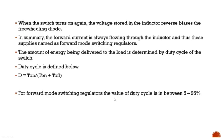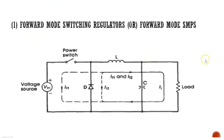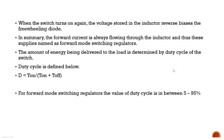When the switch is turned off, the inductor expects current to continue flowing, but due to the open circuit, the freewheeling diode conducts and the inductor discharges. When the switch is turned on again, the voltage stored in the inductor reverse biases the freewheeling diode and it stops conducting. This circuit is called the forward mode switching regulator because in both switch-on and switch-off conditions, forward current flows through the inductor.